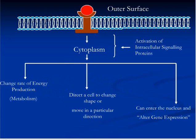Depending upon the signal, a cell can change its rate of energy production, which is known as metabolism. It can change its own shape, or if a cell is mobile, it can start moving in a particular direction, again as directed by the signal. A signal can also go to the nucleus and be responsible for altered gene expression. The outcome in any case will be altered cell behavior.